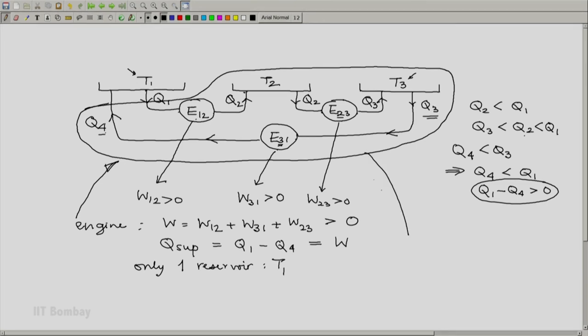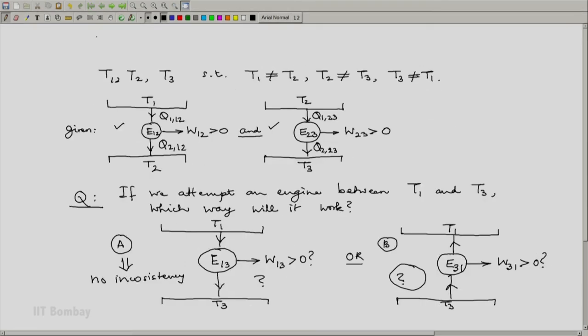So this turns out to be a 1T heat engine, which violates the Kelvin Planck statement. So this is not possible. Because if we assume that this is true, existence of such an E31 will violate the second law of thermodynamics as mentioned by the Kelvin Planck statement.